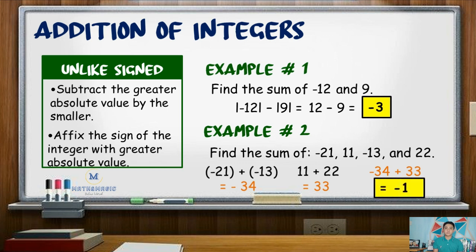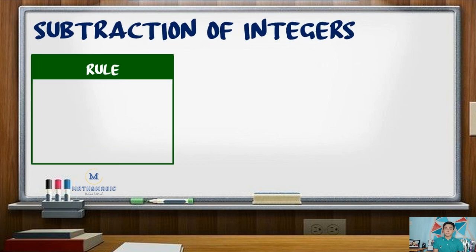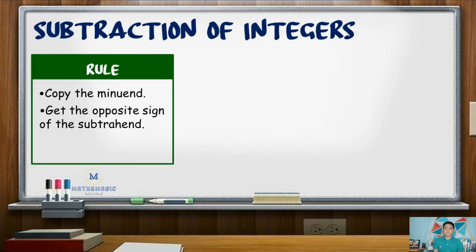In subtraction of integers, we first copy the minuend. Next, get the opposite sign of the subtrahend, then proceed to addition rules.